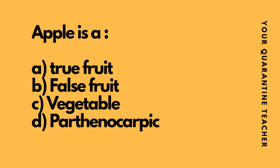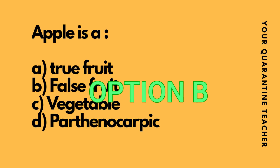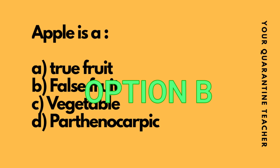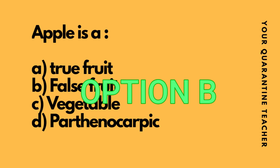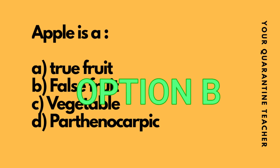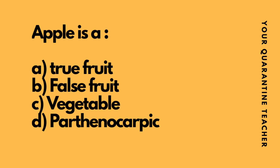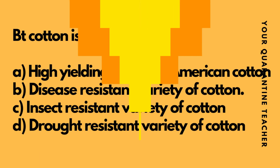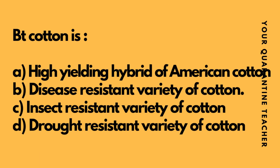Apple is a false fruit — I have asked that in class. Apple is a false fruit and it is called Thalamus fruit. Bt Cotton is an insect-resistant variety of cotton — this is an important point.